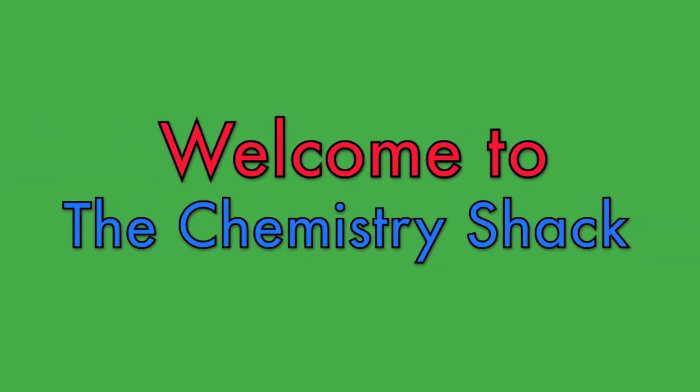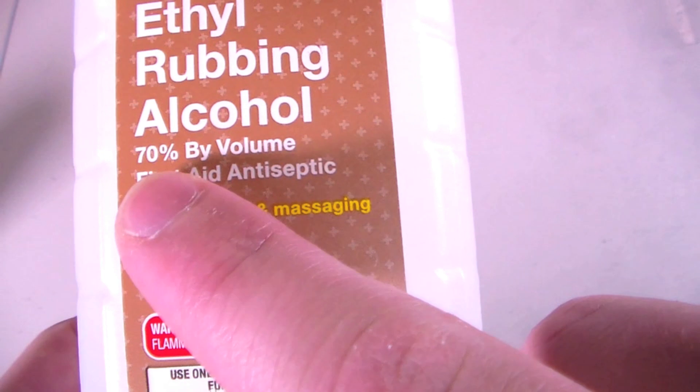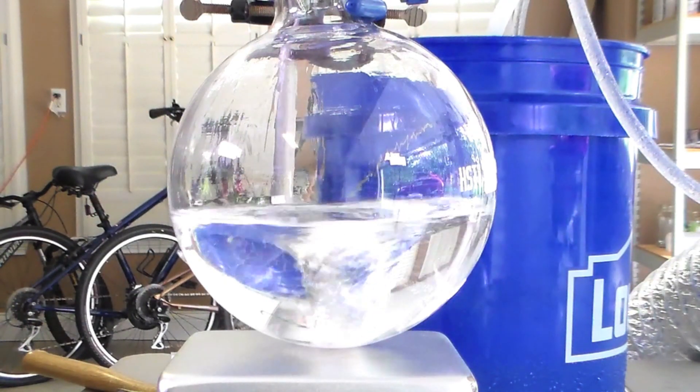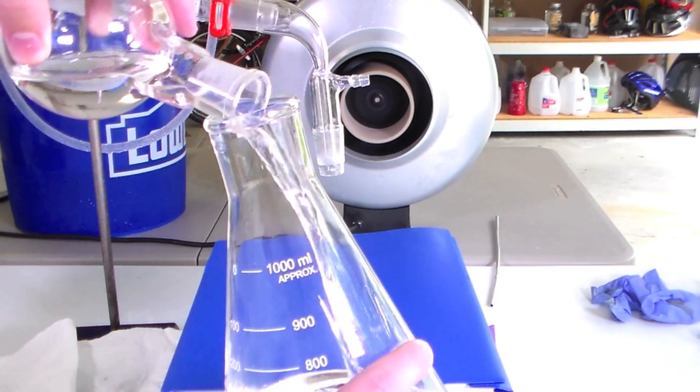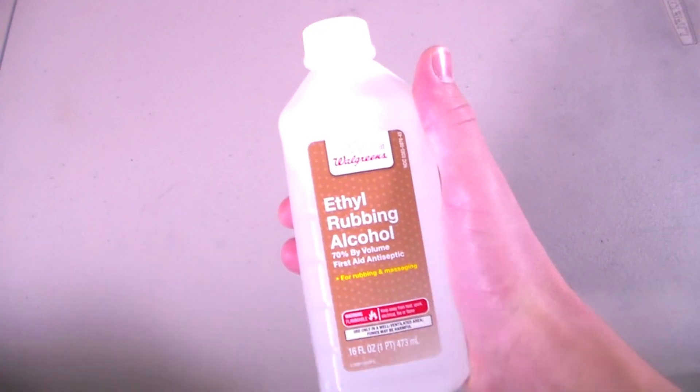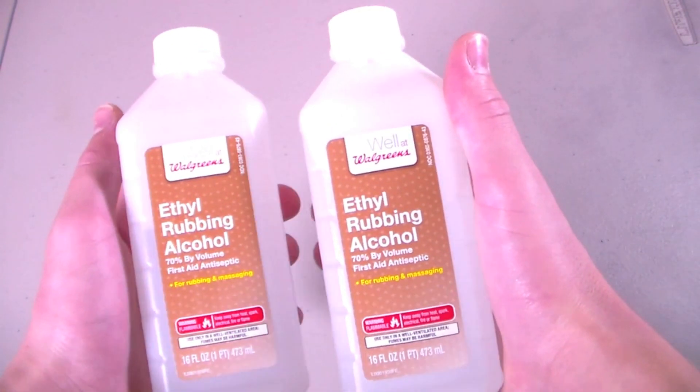Hey guys and welcome to the Chemistry Shack. In this video we will purify 70% ethyl rubbing alcohol to obtain nearly pure and nearly anhydrous ethanol. 70% ethyl rubbing alcohol can be purchased from most pharmacies or supermarkets.